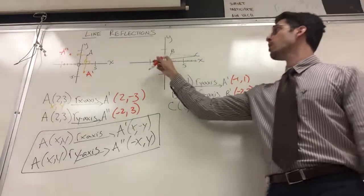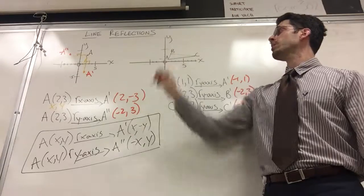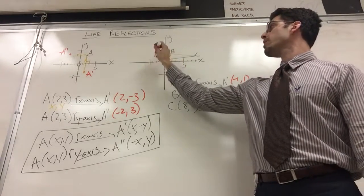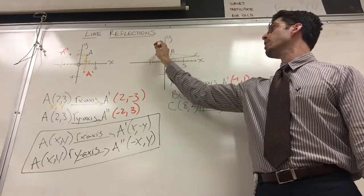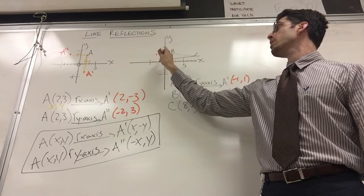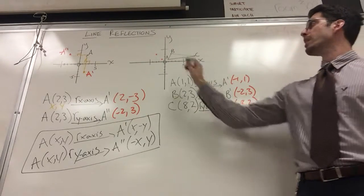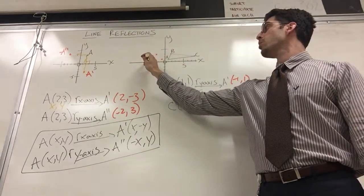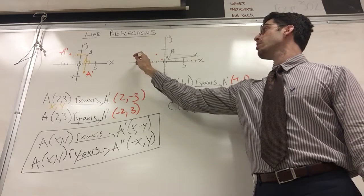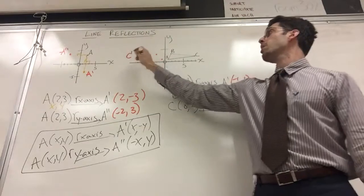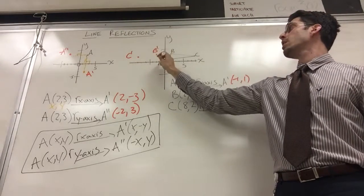And if you actually graph it, one, one goes to negative one, one. Two, three goes to other side, negative two, three. It should be over a little bit. And C, eight, two goes to negative eight. Oh, I needed more lines here. Negative eight, two, which is about here. And I'm going to call it C prime, B prime, and A prime.